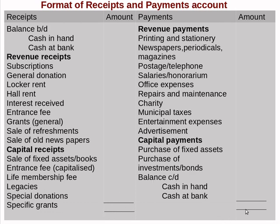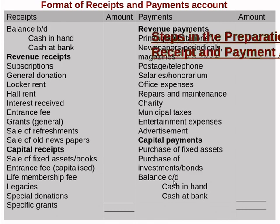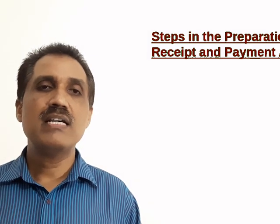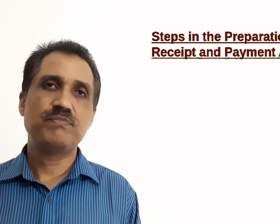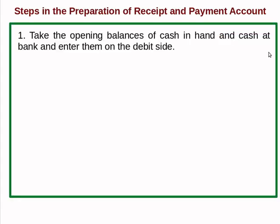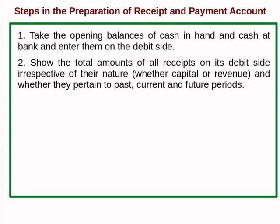The receipt and payment account is totaled and shows the closing balance — cash in hand or cash at bank. Here are the steps to prepare the receipt and payment account: Step one, take the opening balance of cash in hand and cash at bank and enter them on the debit side. Step two, enter the total amounts of all receipts on the debit side, irrespective of their nature — whether capital or revenue — and whether they pertain to past, current, or future periods.